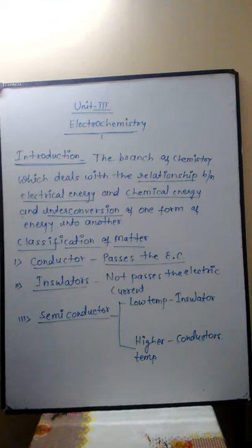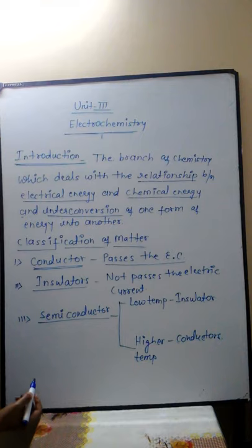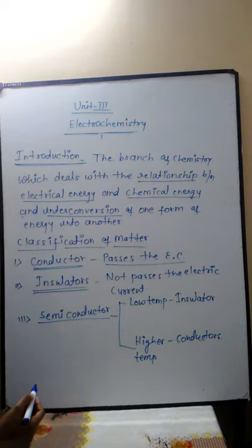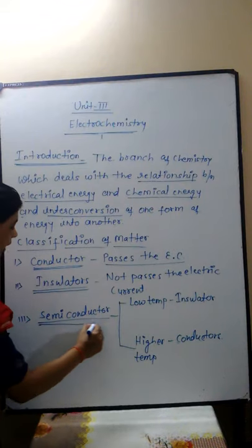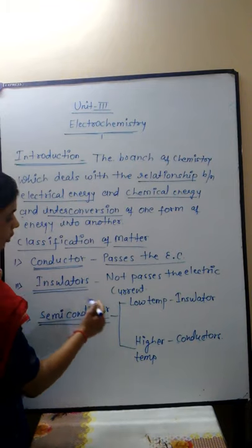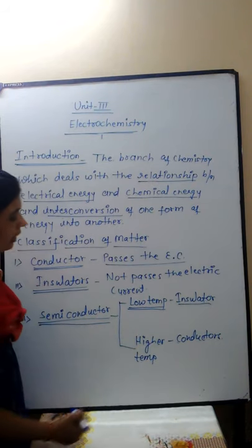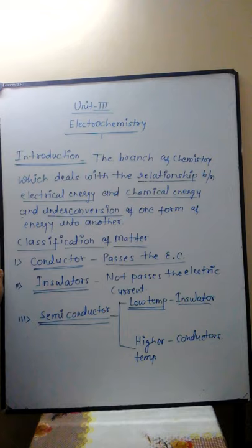On the basis of passage of electric current or conductivity, substances are classified into three types: conductor, insulator, and semiconductor. Insulators are those substances which do not pass electric current through them — examples include plastic and rubber. Semiconductors are intermediate between conductors and insulators; at low temperature they behave as insulators, but at higher temperature they act as conductors. Germanium and silicon behave as semiconductors.